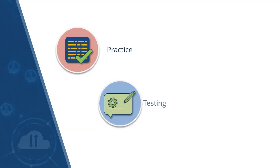Finally, the ninth principle comes down to diligence, practice and testing, and then to document those tests — then repeat. Even if you were successful in creating a very resilient system that requires minimal intervention or administration, anything can still go wrong at any time. So you need to ensure that you can address those issues if and when they happen.